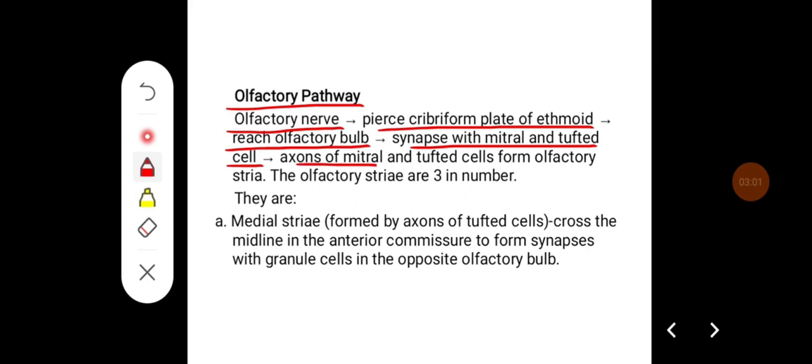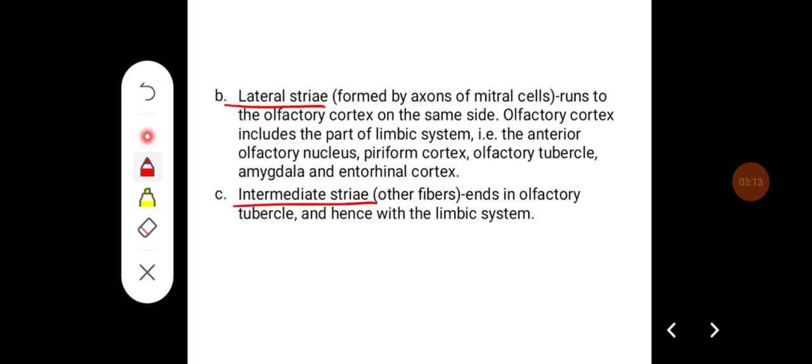From there, axons of mitral and tufted cells form olfactory stria and the olfactory stria are three in number and they are medial stria, lateral stria and intermediate stria.